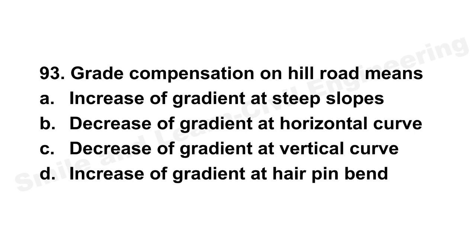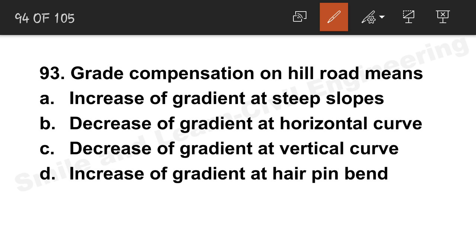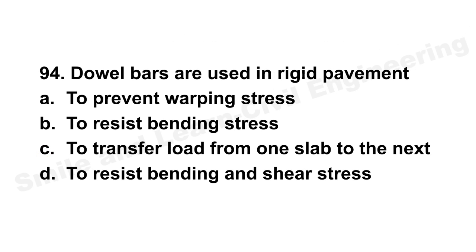Question 93: Grade compensation on hill roads means decreasing the gradient at a vertical curve. You need to reduce the gradient since it is already a hill road. Question 94: Dowel bars are used in rigid pavement to transfer load from one slab to the next. Option C is the correct answer.